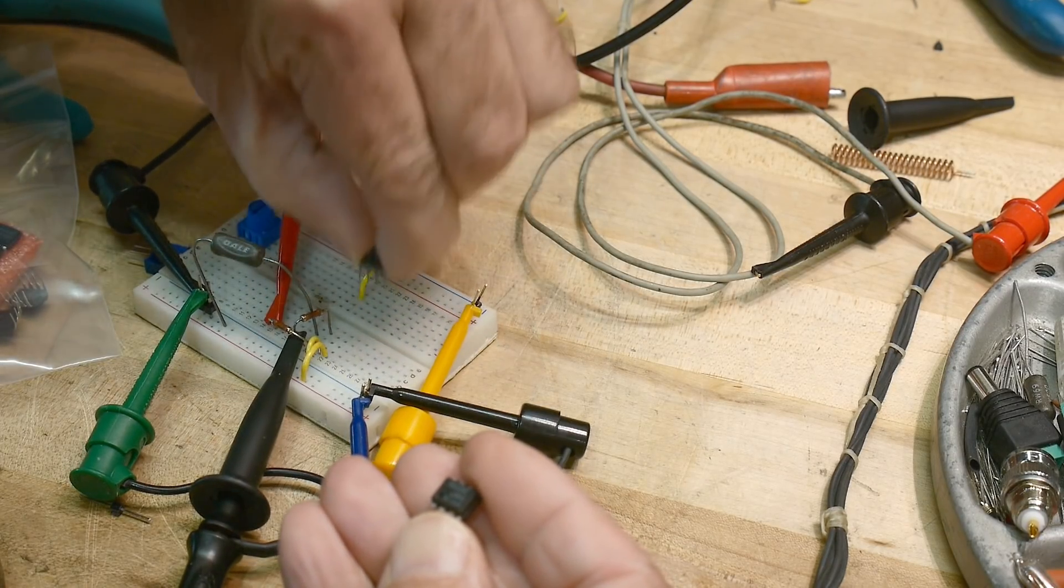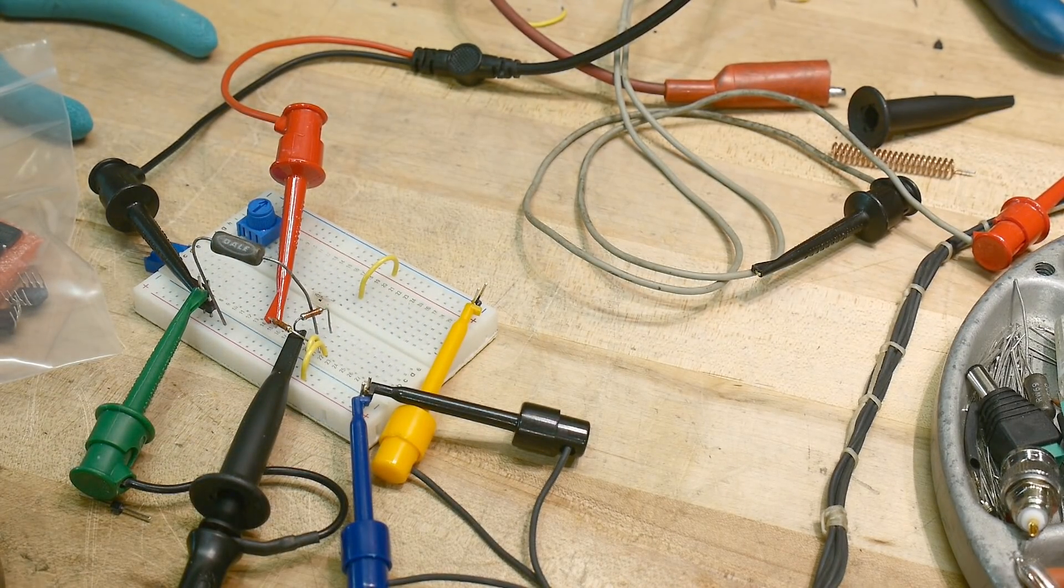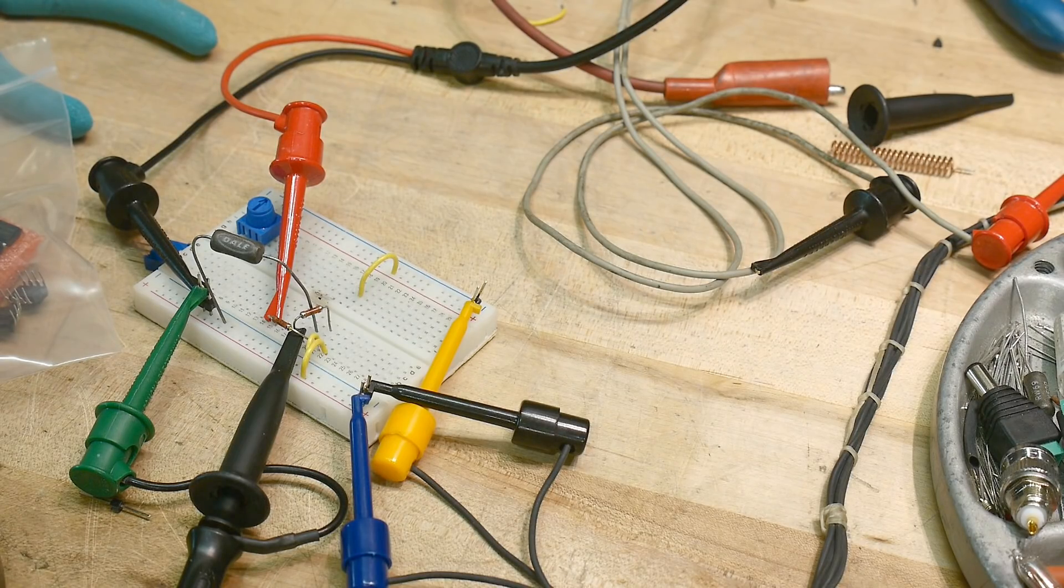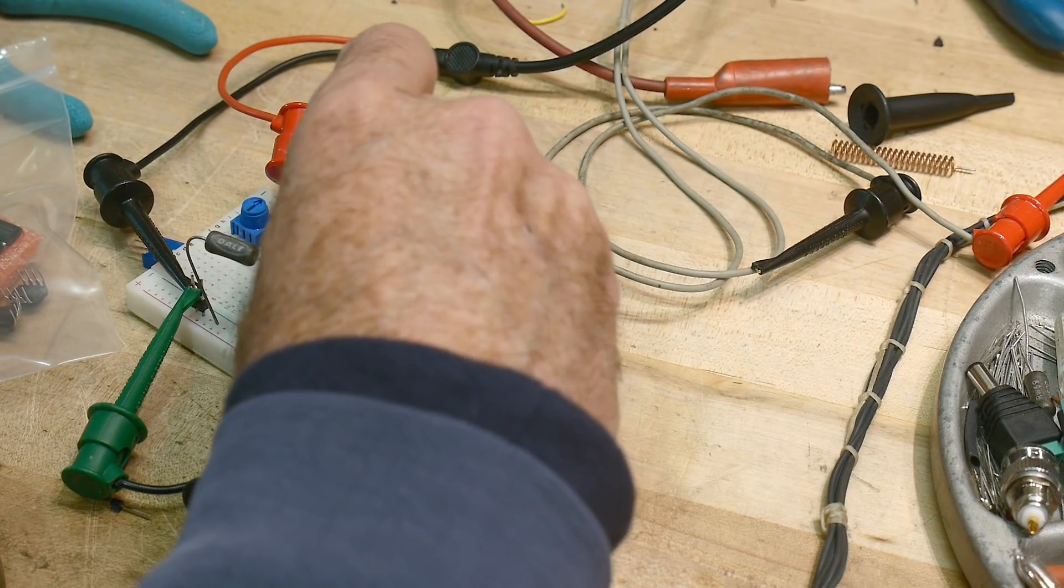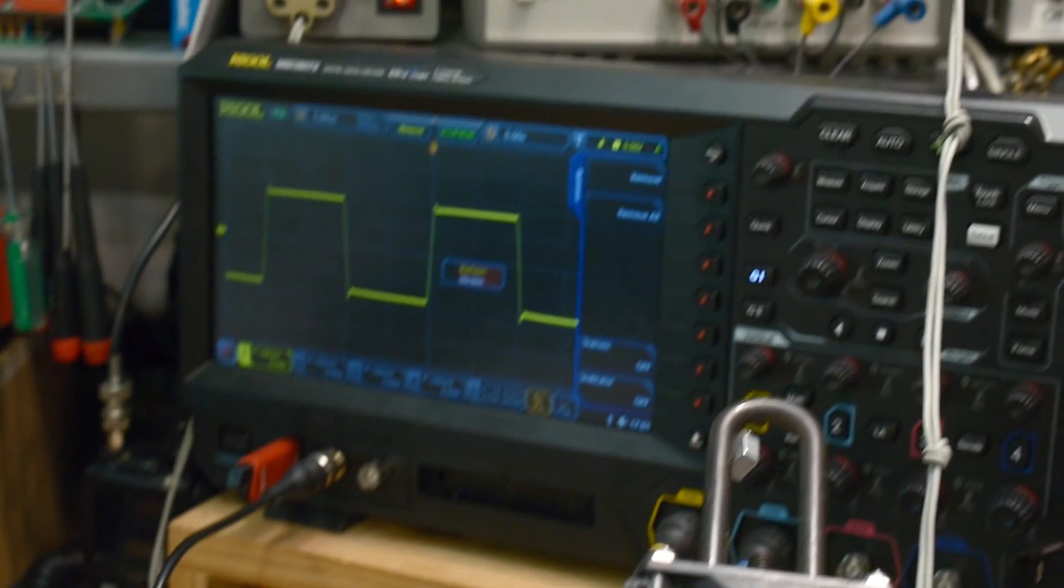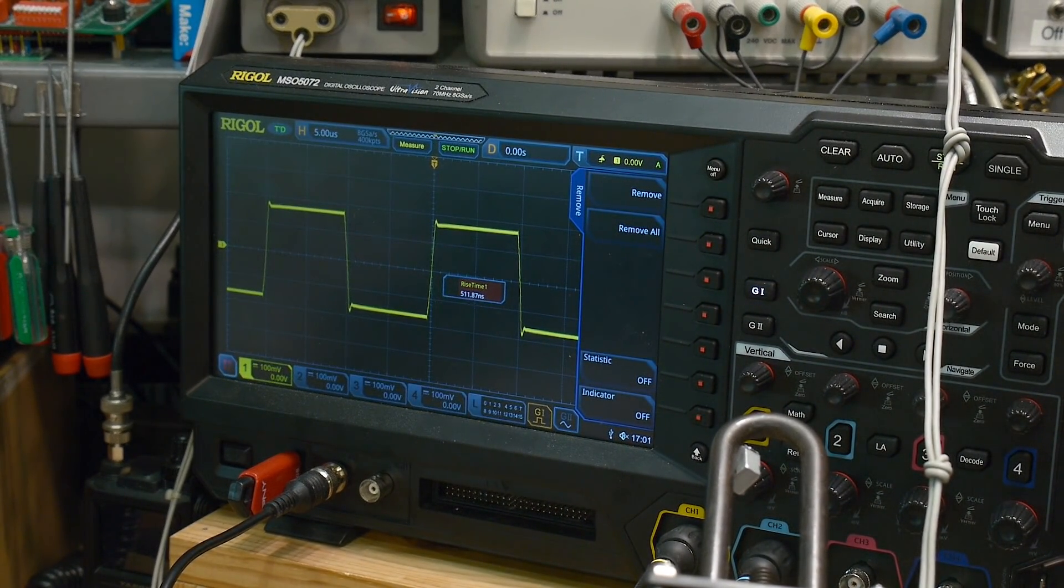This one is an actual official JRC part. This is a JRC 5532, Japan Radio Corporation. They're the ones who invented this part I believe. We'll pop him in. Now let's take a look at him. Look at that, that was beauty, joy forever. He's even a little bit faster, he's about 510 nanosecond rise time.